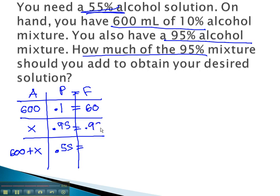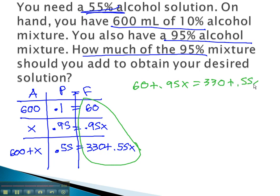60, 0.95x, and 330, plus 0.55x. Again, our equation will come from the last column: 60 plus 0.95x equals 330 plus 0.55x.